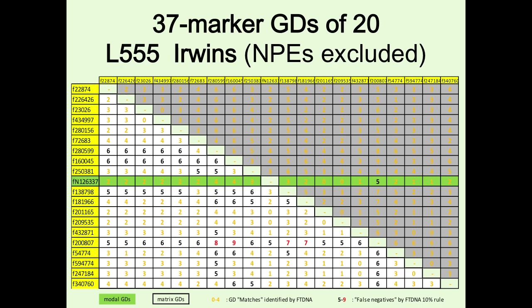I've taken 20 of my L55 Irwins and compared them two ways — against the mode, and as a full kit-to-kit matrix. One individual has kit-to-kit distances of five, five, six, eight, nine — none below four — so you'd think he definitely isn't a match. He doesn't appear on the matches page. And yet he is deeply embedded in L55, right in the middle, not just on the fringe — a bona fide Irwin, just very divergent in his STRs.